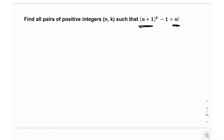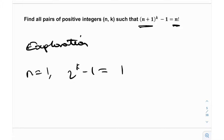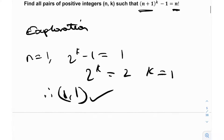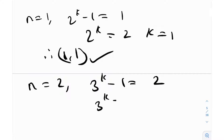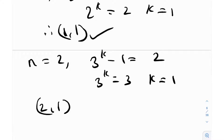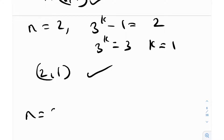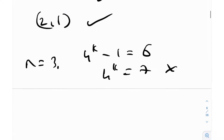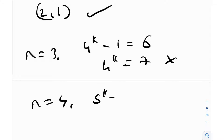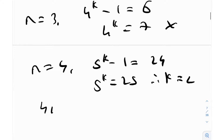So what do you do? You first explore it — let's just plug in certain values and see what we get. At n=1: 2^k - 1 = 1! = 1, so 2^k = 2, giving k=1. So (1,1) is a solution. At n=2: 3^k - 1 = 2! = 2, so 3^k = 3, giving k=1. So (2,1) is also a solution. At n=3: 4^k - 1 = 3! = 6, so 4^k = 7 — no integer solution. At n=4: 5^k - 1 = 4! = 24, so 5^k = 25, giving k=2. So (4,2) is another solution.